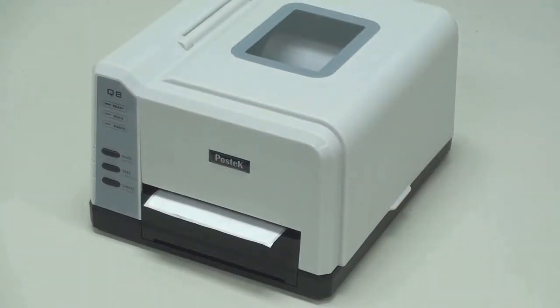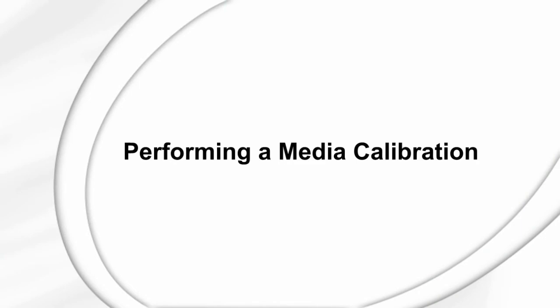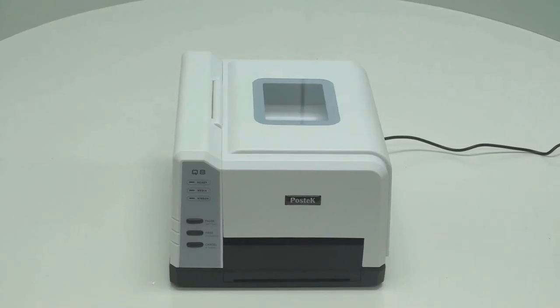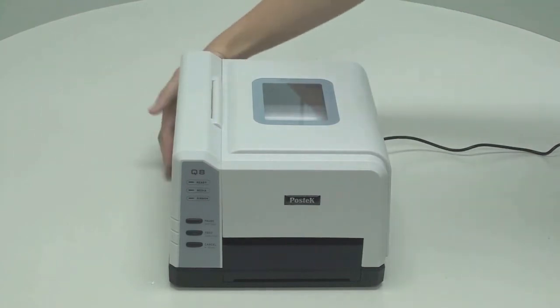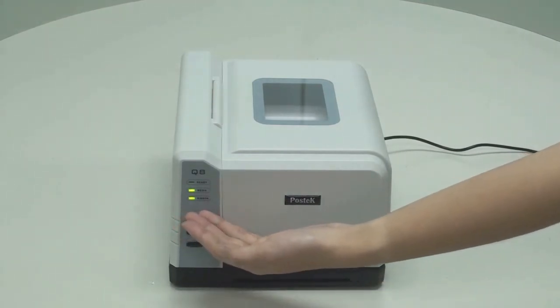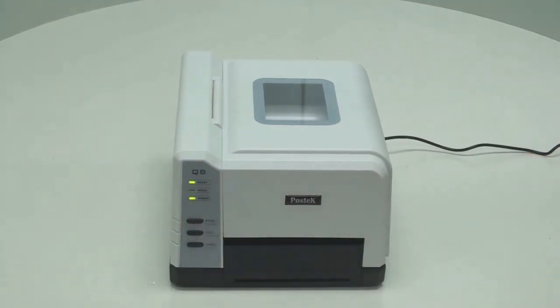To ensure proper alignment of labels, the next step is to perform a media calibration. To calibrate the media, first, turn the printer on. You'll see the three indicator lights on the front panel light up.